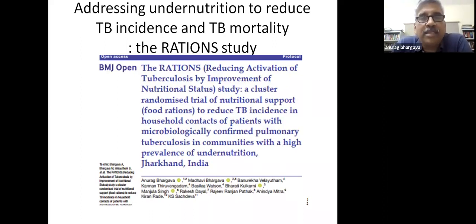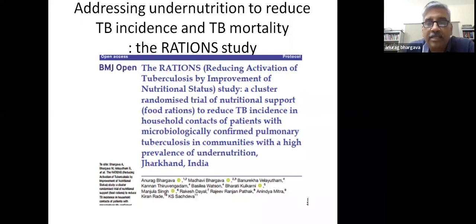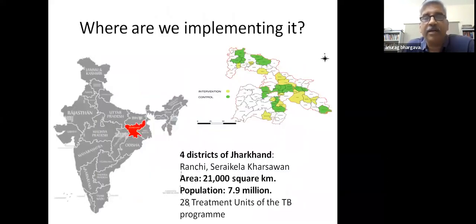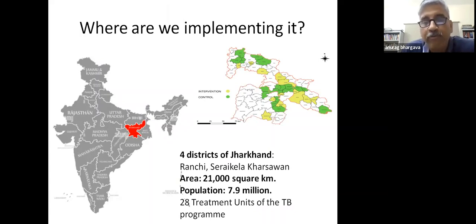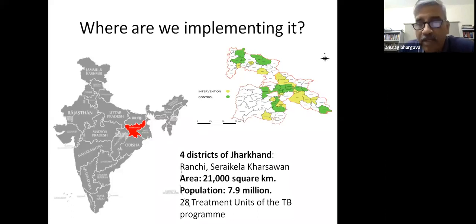The RATION trial is currently testing whether addressing undernutrition in communities with high prevalence of undernutrition can reduce TB incidence. It has been running in Jharkhand in eastern India since August 2019. Collaborators include colleagues from the National Institute of Research in Tuberculosis, funded by ICMR. The study spans four districts of Jharkhand over 24 treatment units. It is a cluster-randomized trial: the control arm provides nutritional support only to patients, while the intervention arm provides food rations to both patients and family members.